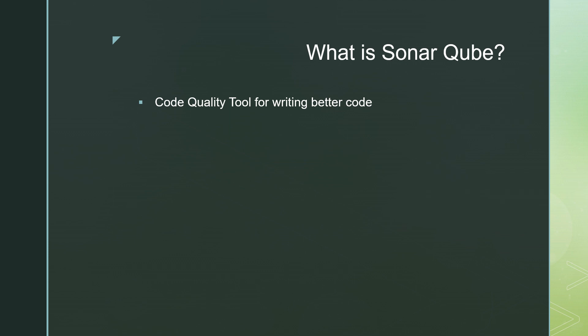Every team member is supposed to follow those code quality standards — their code should meet all of them. SonarQube is the tool used to meet high code quality standards. You can use the SonarQube server to analyze your project and check if it is meeting the code quality standards or not.